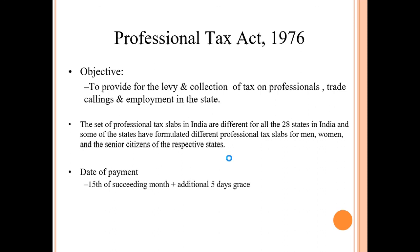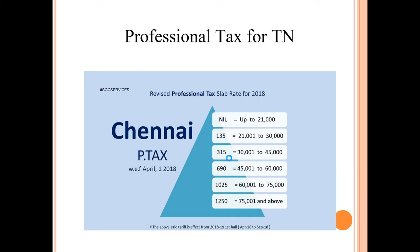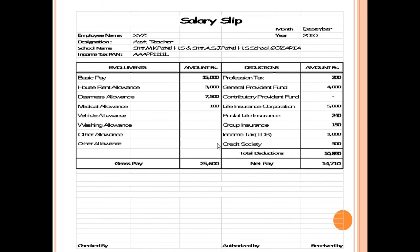Professional tax (PT) is another important component, collected once every six months. It differs from one state to another. As per the slab: up to rupees 21,000 gross salary over six months is not eligible for PT; from 21,000 to 30,000 it is rupees 135. The applicable amount per slab is deducted from the employee's salary.